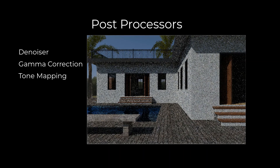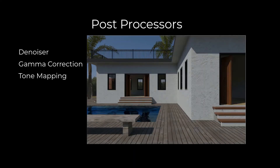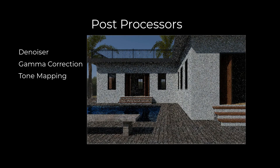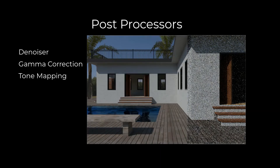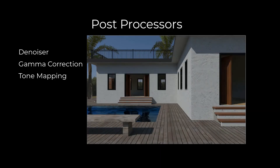Options also exist to adjust the final image result through post processing. These include gamma correction to adjust contrast, tone mapping to rebalance light, and denoisers to reduce fireflies and reduce overall rendering time.